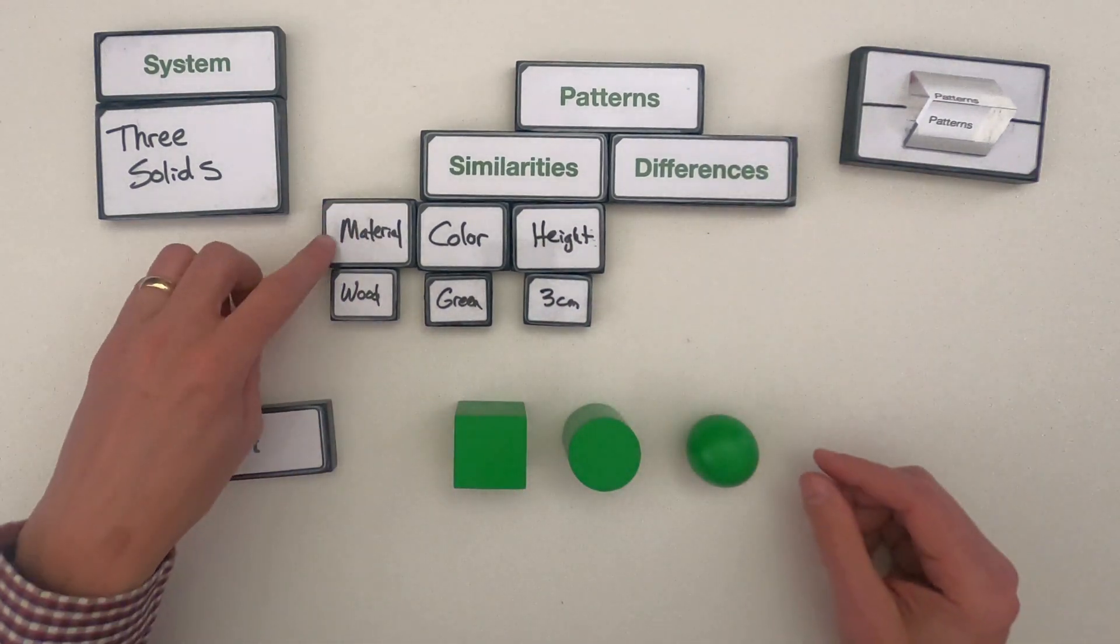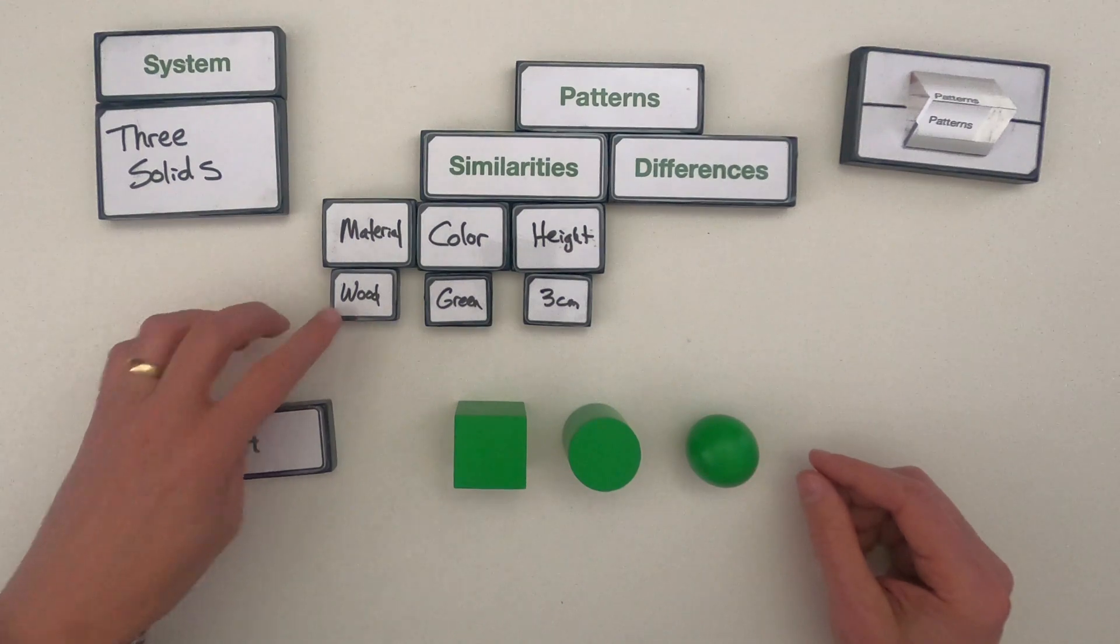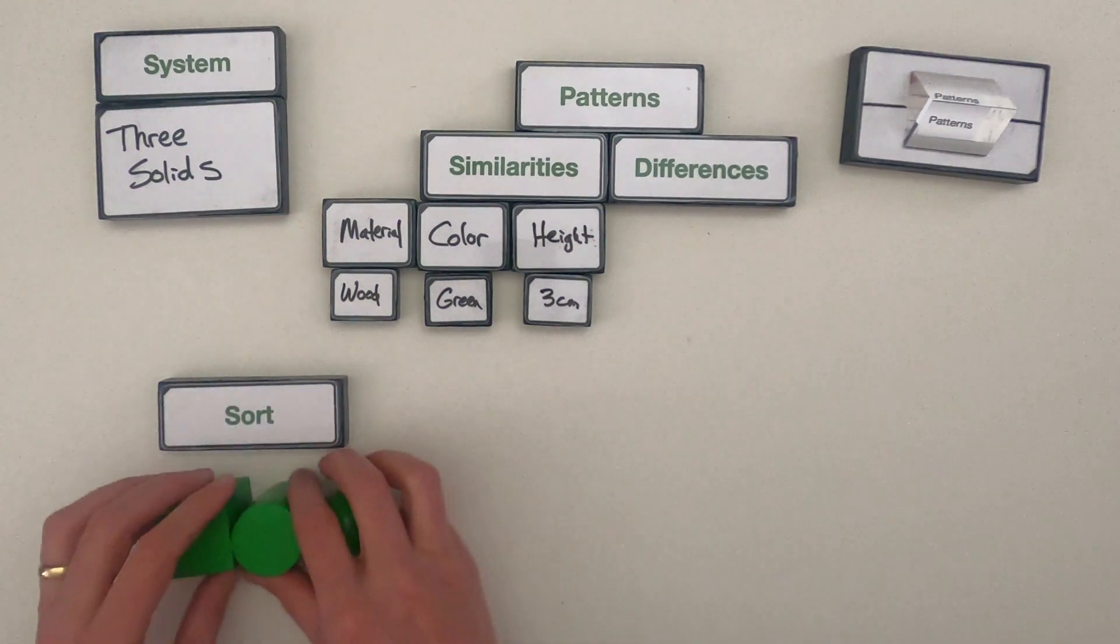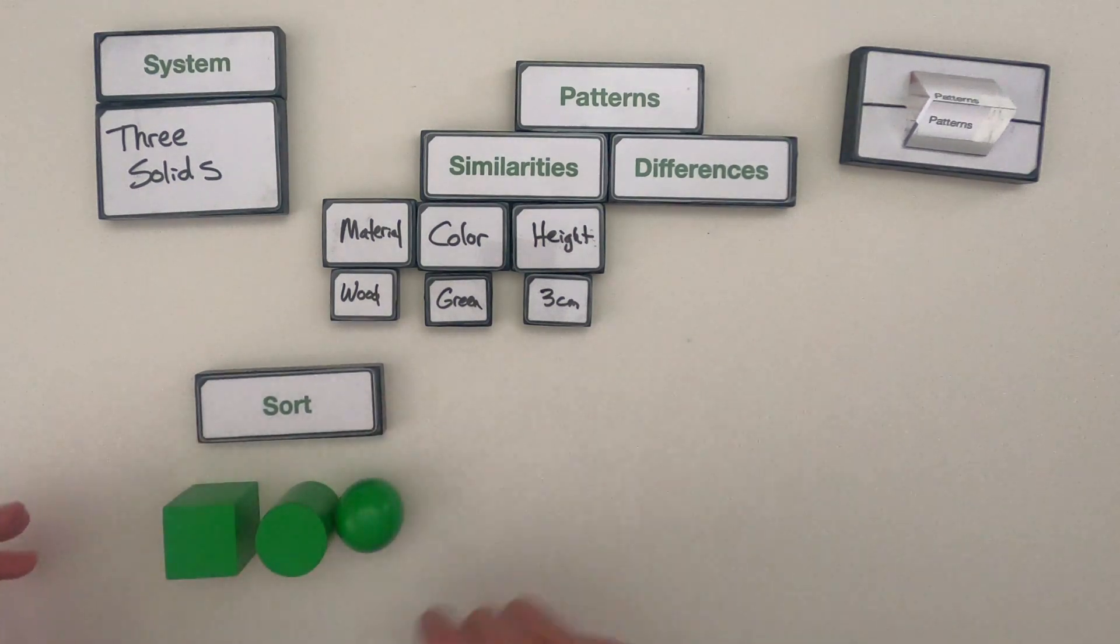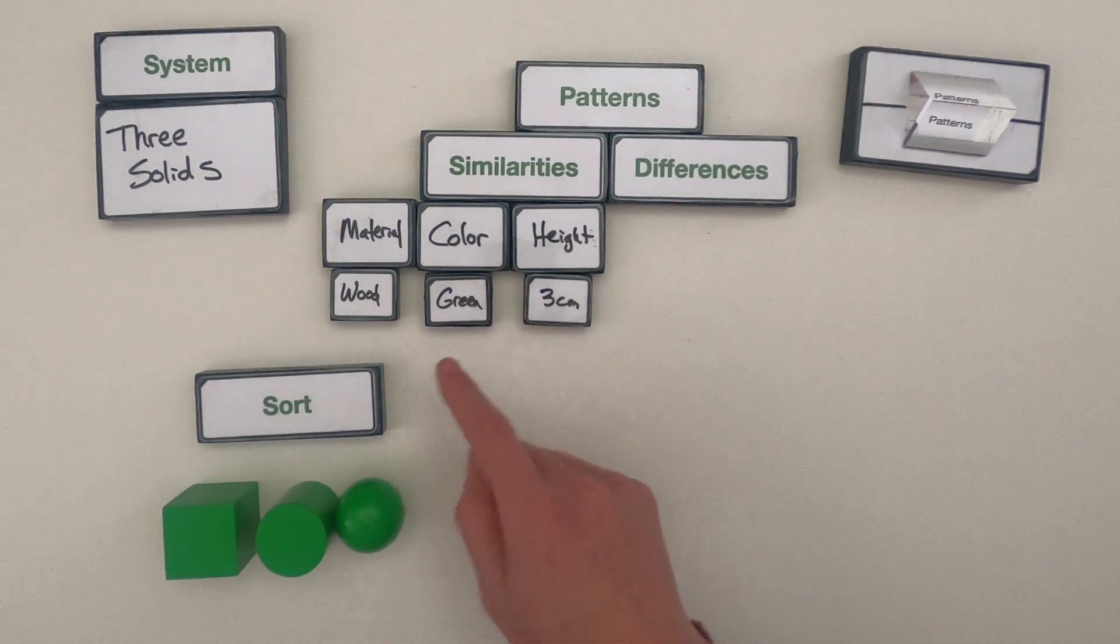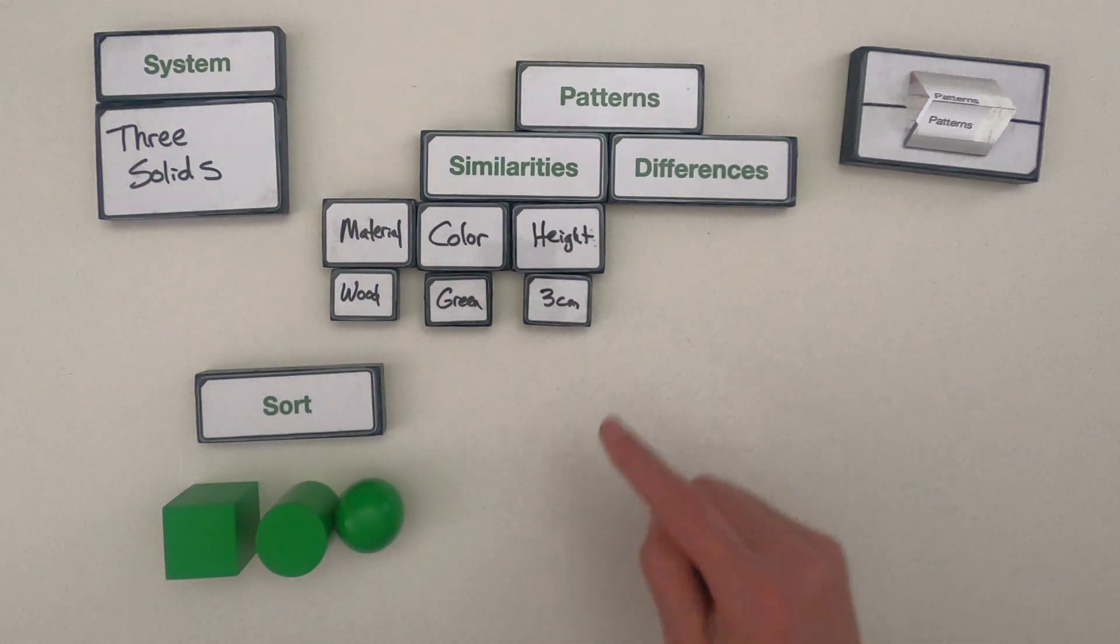So what I've shown here is that they all are made of the same material which is wood so I could sort all of these objects into a category that is those that are made up of wood. I could do the same thing with those that are made of green and it would be the same sort or I could do the same thing with those that are made with a height of around three centimeters.